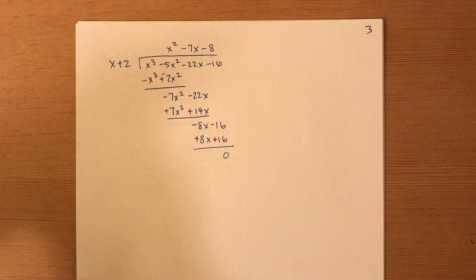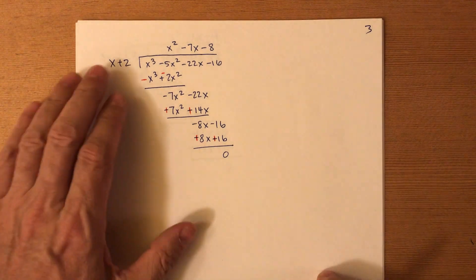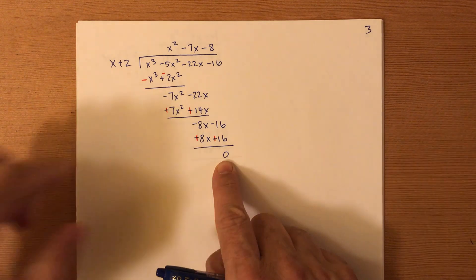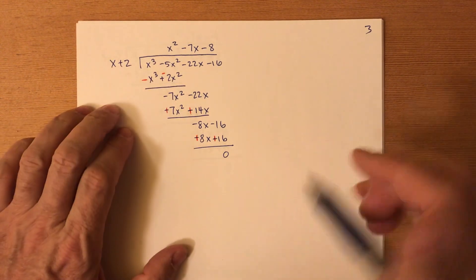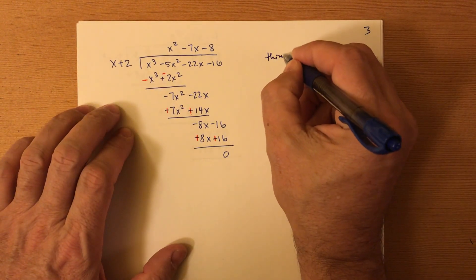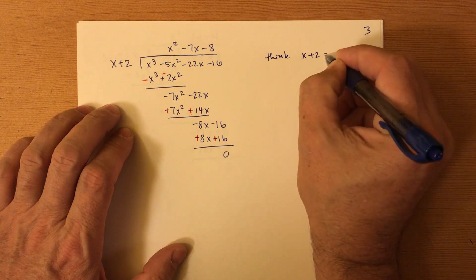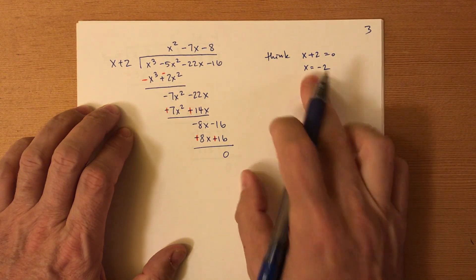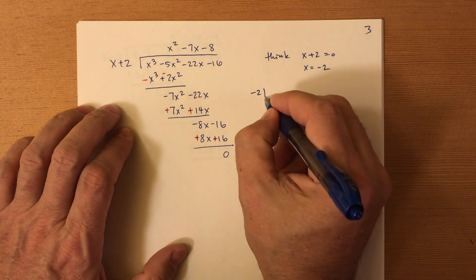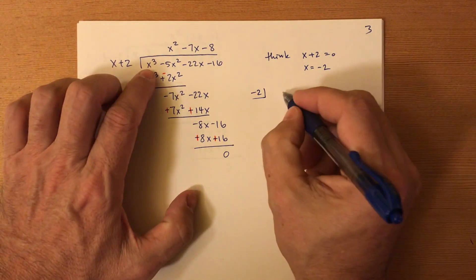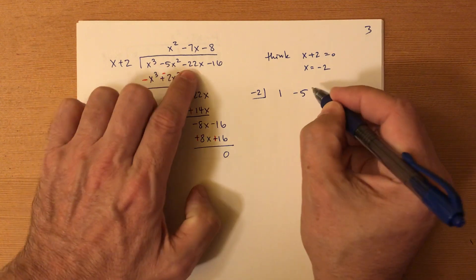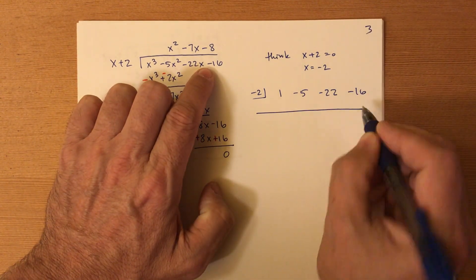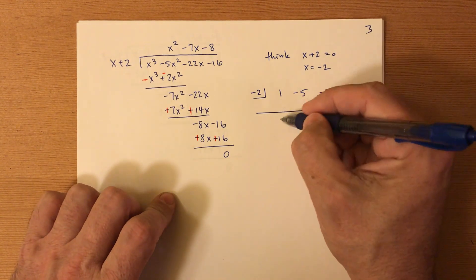All right, one more. Actually, no, there's two more. So let's just do this one a little faster. Notice here, a remainder is zero. And so now let's do it again. So think x plus two equals zero, x equals negative two. So we're gonna put negative two, put in the cage. We got one. We got negative five. We got an eight of 22. We got negative 16. Okay, there we go. Here we go. Drop down one.